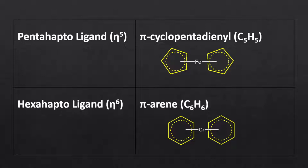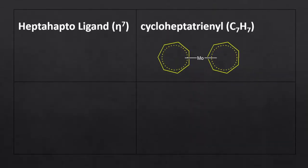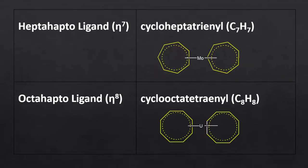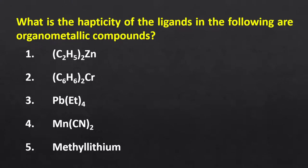Like allyl ligand, cyclopentadienyl and arene also show dual hapticity — they are considered monohapto ligands when they form a bond with the metal through the sigma electrons of one carbon. The examples of heptahapto and octahapto ligands are cycloheptatrienyl and cyclooctatetraenyl respectively, forming bonds with the metal using pi electrons delocalized over the entire cyclic ring. I hope now you all understood and can classify ligands based on their hapticity.